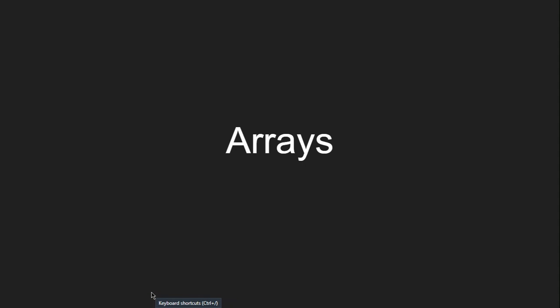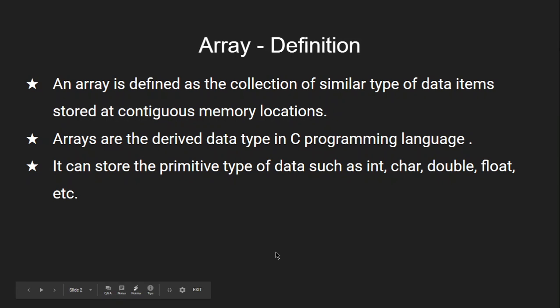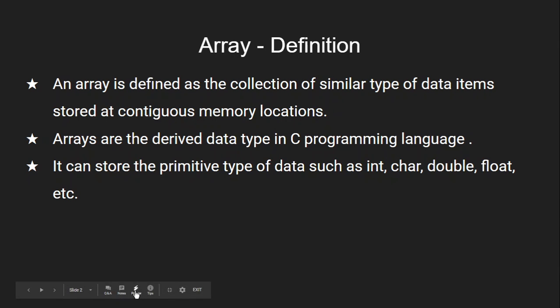Hello everyone. In this video we are going to see about array basics. An array is a collection of same type of elements under a single name. The array may be an integer array, character array, or float array. An array is defined as a collection of similar data types — similar type of data items stored at continuous memory locations.